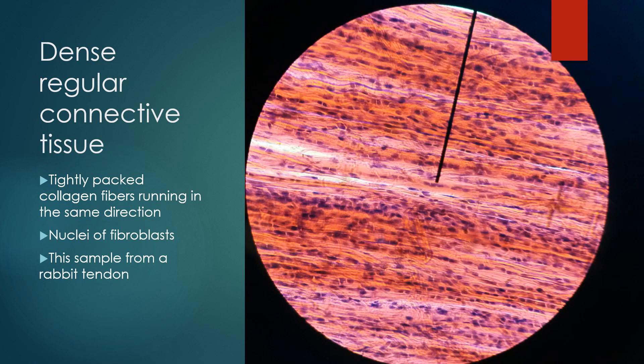Number five was dense regular connective tissue. What we see here are tightly packed collagen fibers that are running in the same direction. Notice there's very little space between all of these fibers. They're all running parallel to one another, and these are collagenous fibers. The nuclei that you see here belong to fibroblasts, which are the cells that produce these collagenous fibers. This particular sample was taken from a rabbit tendon.